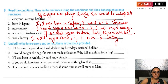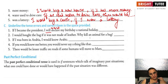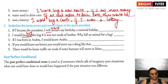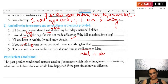Underline the errors and correct them. 'If I became the president, I would declare my birthday a national holiday' — this is correct. 'I would buy the bag if it was not made of leather' — correct. 'If I was born in Arabia, I would know Arabic' — correct. 'If you would know me better, you would never say a thing like that' — corrected: if you knew me better, you would never say a thing like that. 'There would be lesser traffic on roads if some humans moved to Mars' — correct.